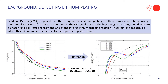It's well known that a voltage plateau occurs in the standard voltage versus capacity plot if you do a discharge immediately after a fast charge, or in a voltage versus time graph if you rest after a fast charge, which is associated with lithium plating. In 2014, Petzl and Dancer proposed a method of quantifying lithium plating by differentiating the voltage-capacity plot, where the plateau turns into a minimum. They hypothesized that the capacity at which the minimum occurs is the capacity of lithium that was plated.